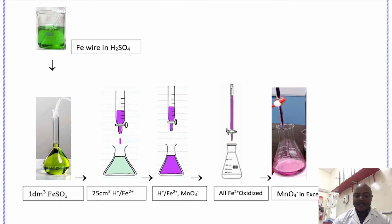There are some basic concepts learners need to know. In this experiment, as earlier said, there is oxidation and reduction taking place simultaneously. Potassium manganate(VII) is being reduced from +7 to +2. Meanwhile, the iron(II) is oxidized from +2 to +3.